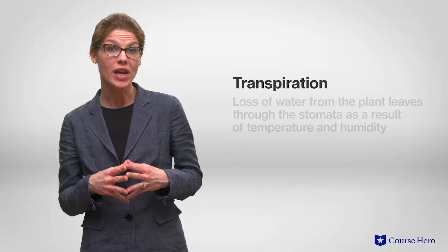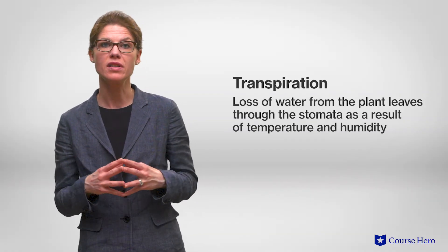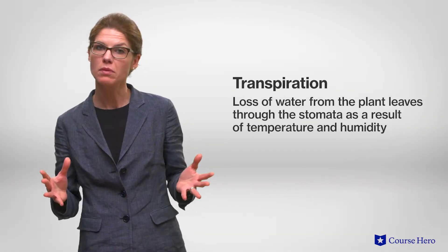Thus, transpiration — the loss of water from the plant leaves through the stomata — creates negative pressure at the top of the plant, resulting in tension which draws water upwards. Water's cohesion means each water molecule that rises because of this tension pulls another water molecule along. When these water molecules reach the leaves, they evaporate through transpiration, continuing the process.